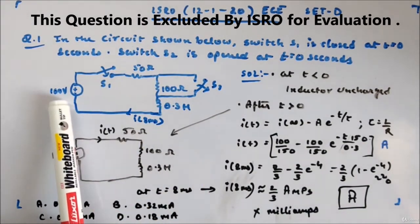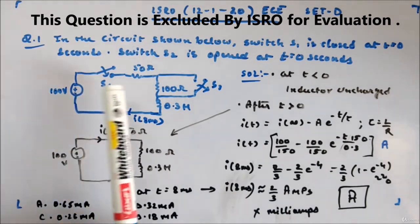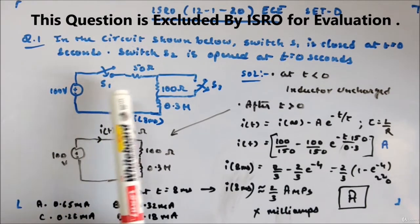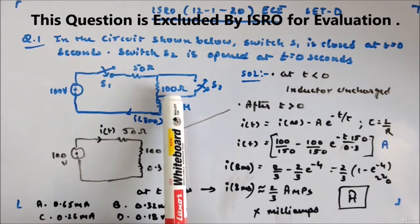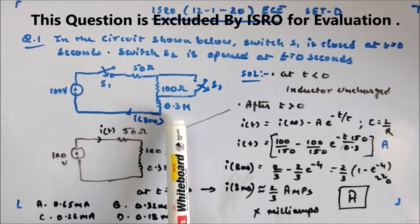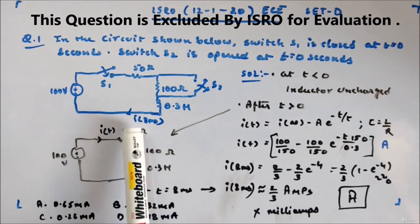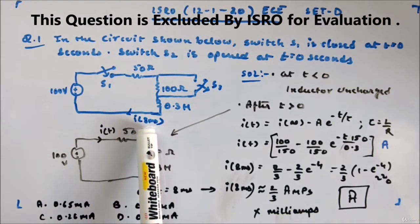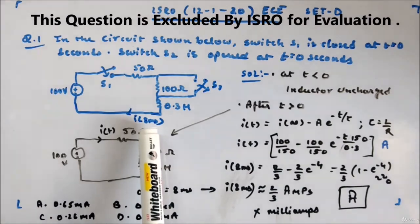There is a 100 volt battery, then there is a switch S1, 50 ohm resistor, 100 ohm resistor, 0.3 henry inductor. You have to calculate the value of current through the inductor at 8 milliseconds.